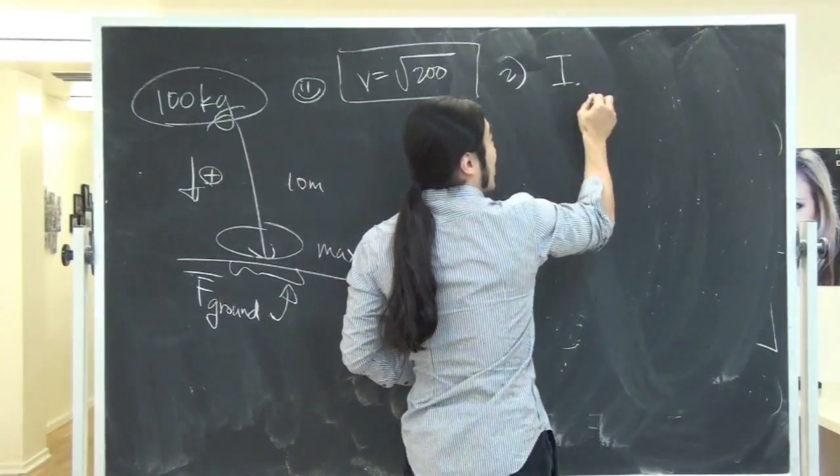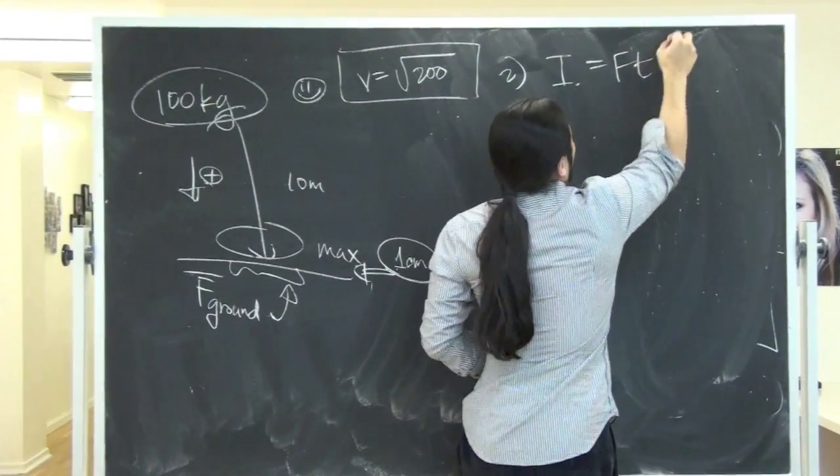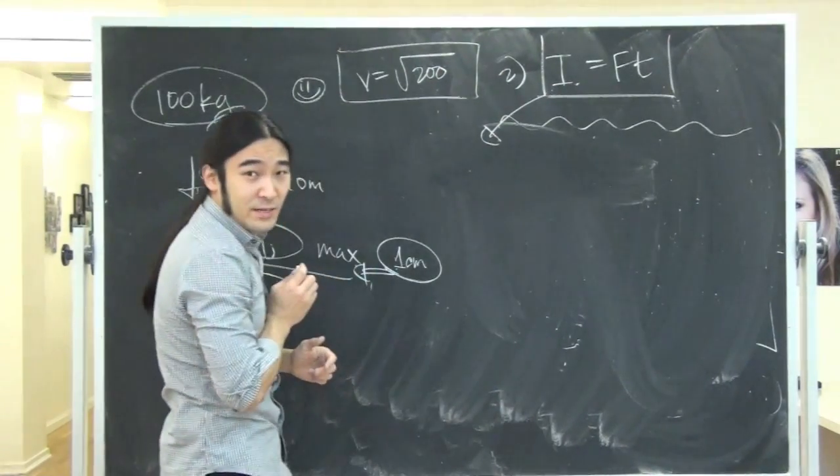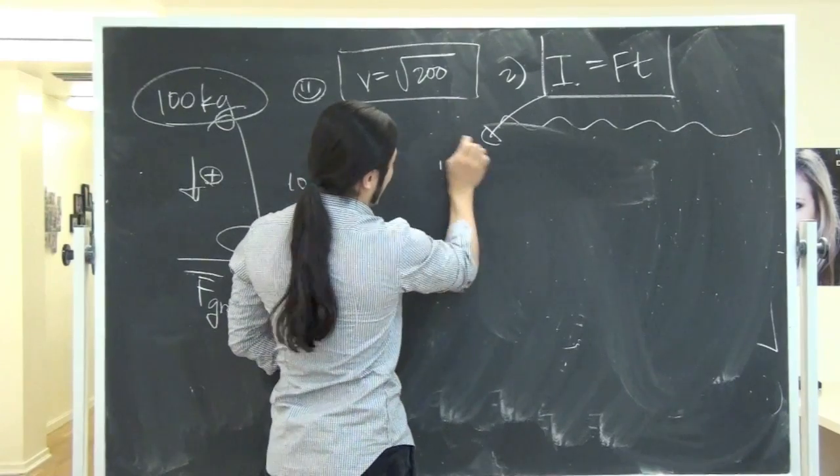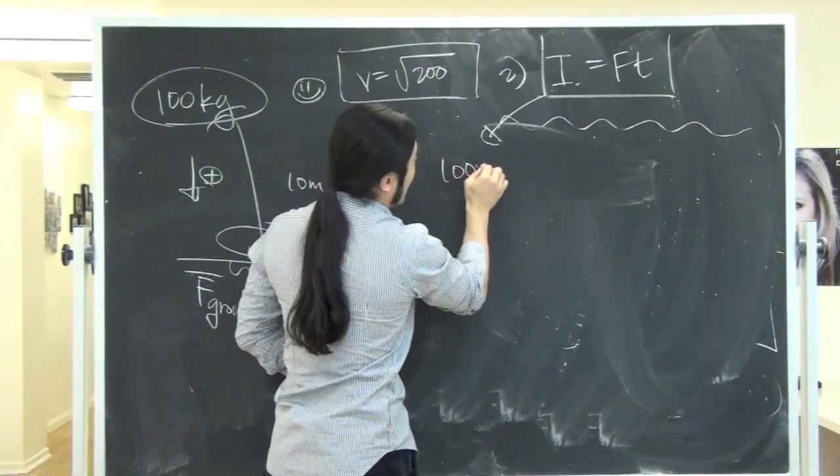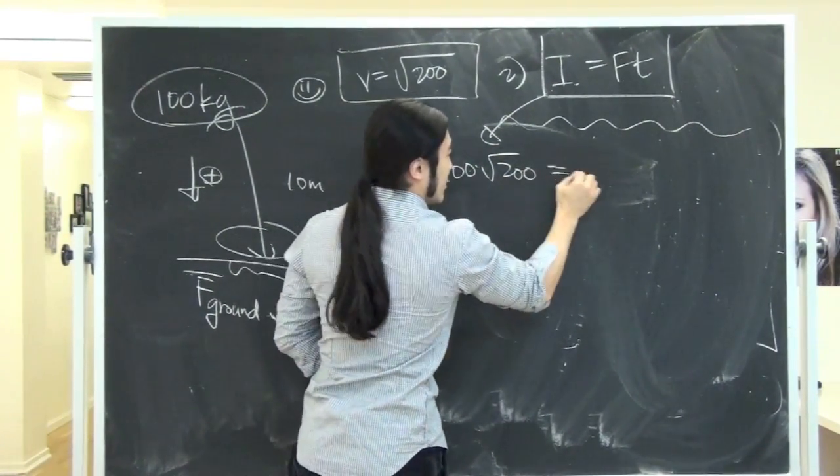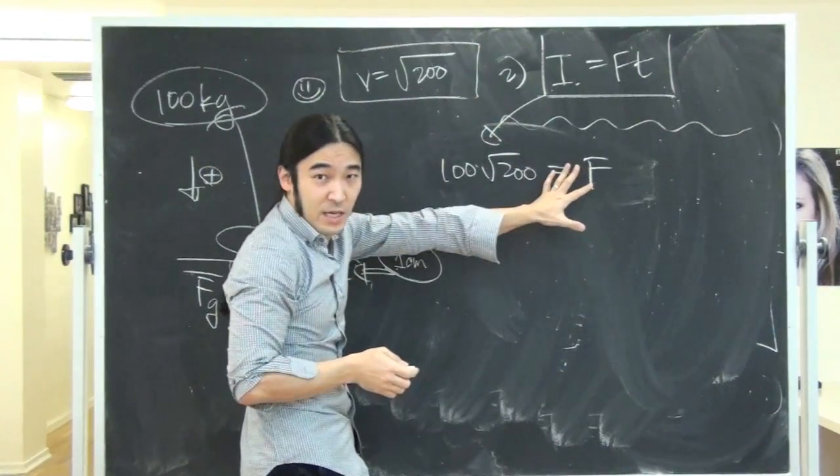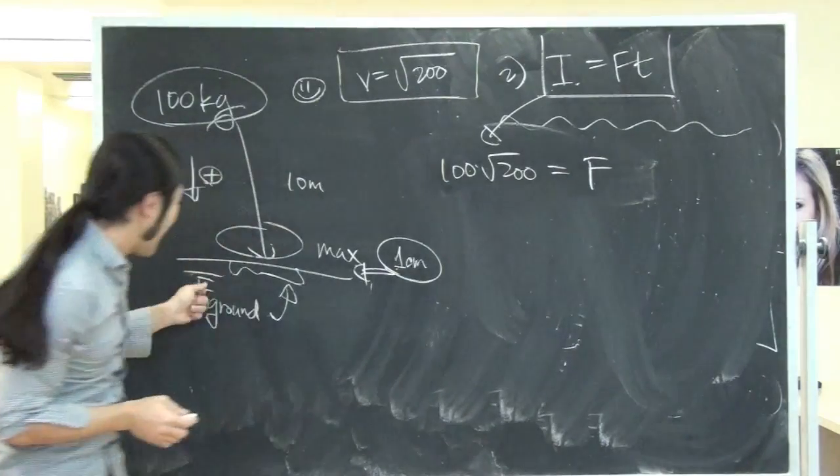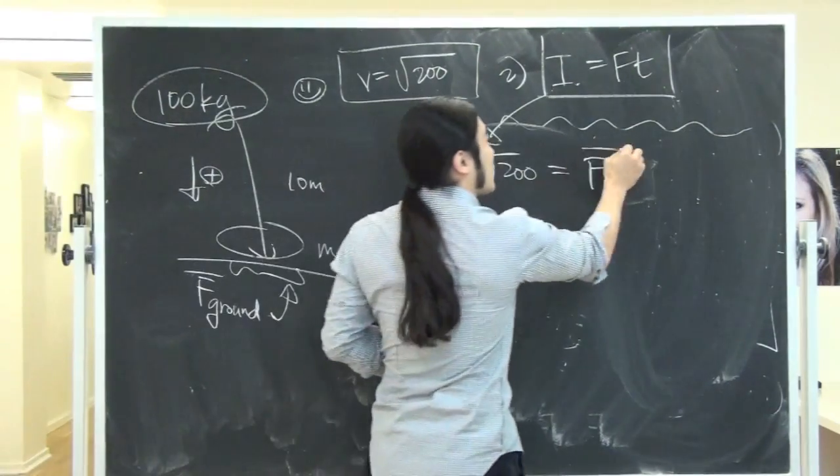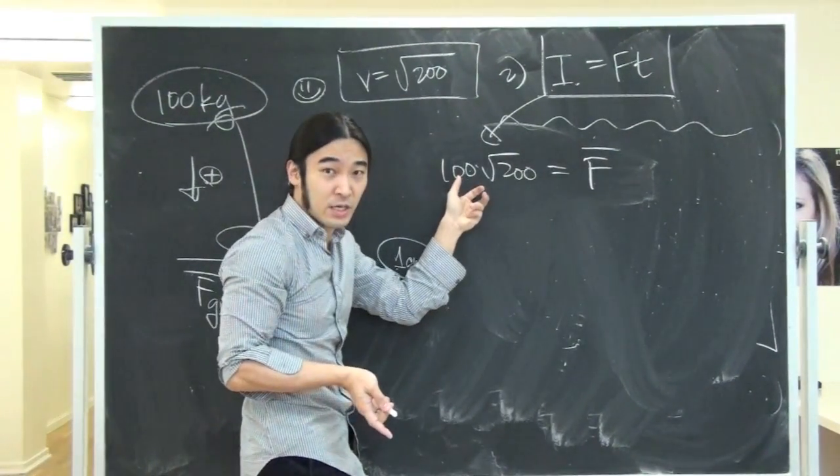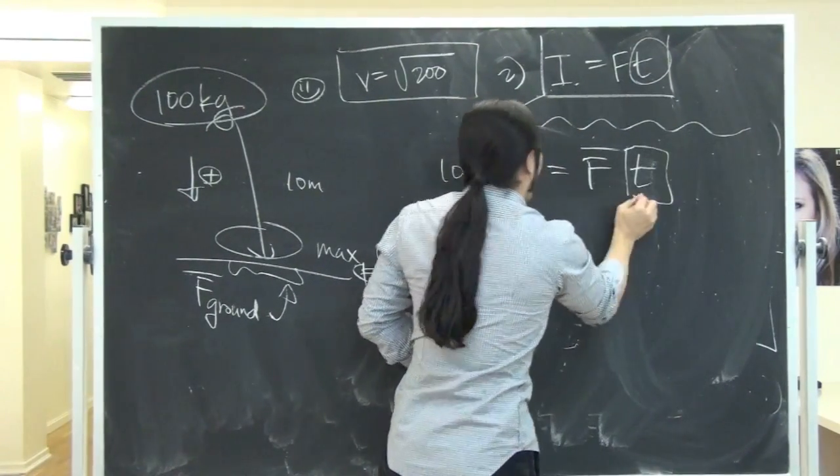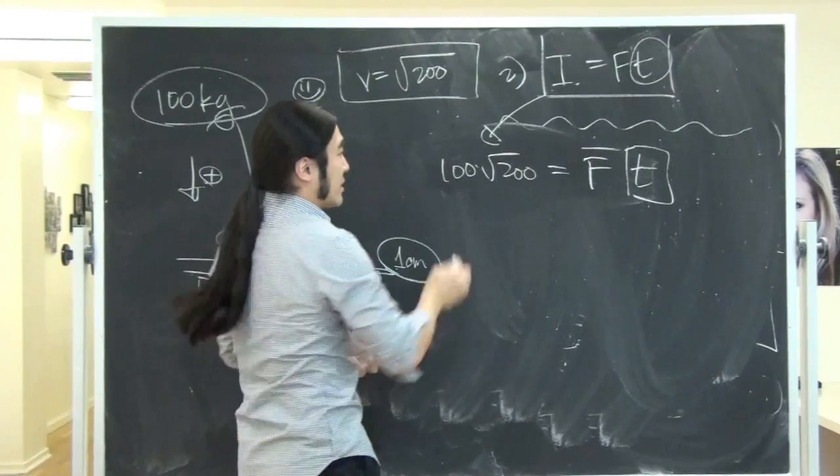So first, again, we're going to do it by impulse. Impulse is force times time. We already know the impulse. The impulse is something like 100 times root 200. I want to find the force. This time the force, I don't know, so I'm solving for this. But what I'm going to represent this as, this is the average force provided by the ground, but this is the average force causing that impulse. So it's a little bit different. Now I'm going to look over at the time. So I guess we need the time to finish this problem.